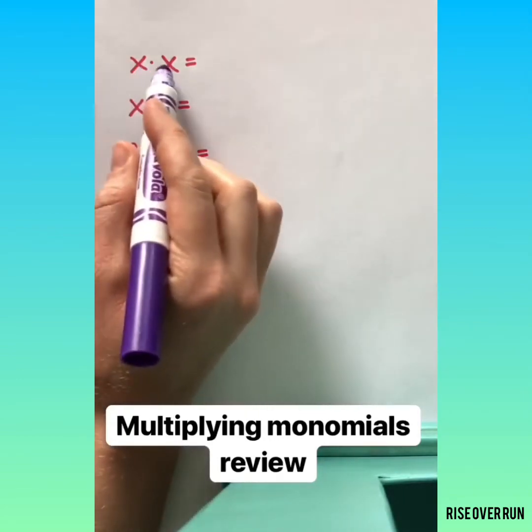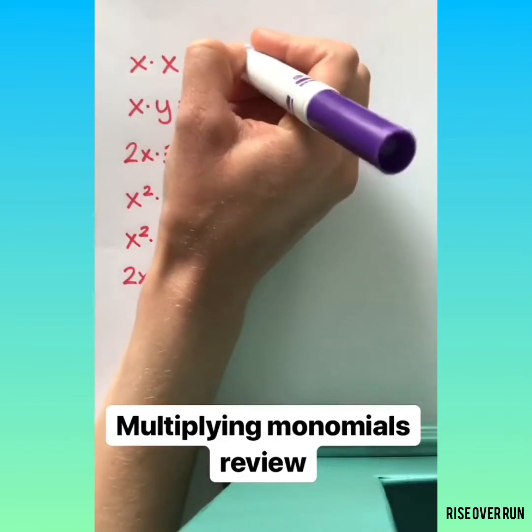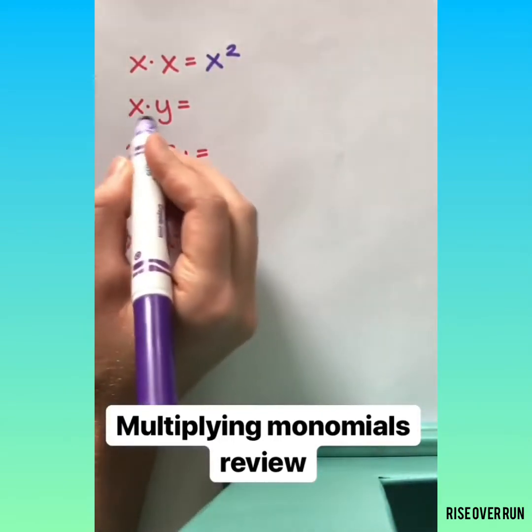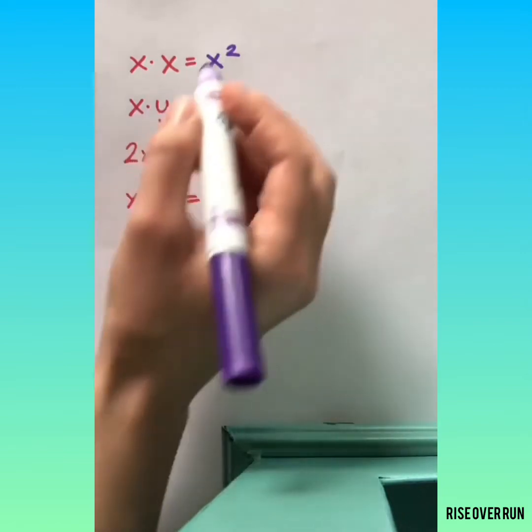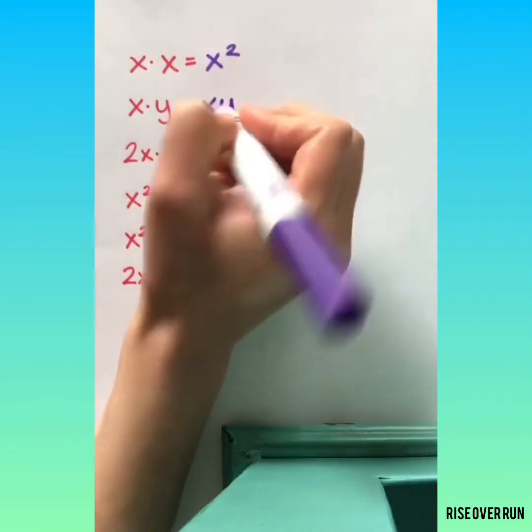So if I want to multiply x times x, that's x squared. x times y, those are different variables, there's no way to combine them, so we would write xy.